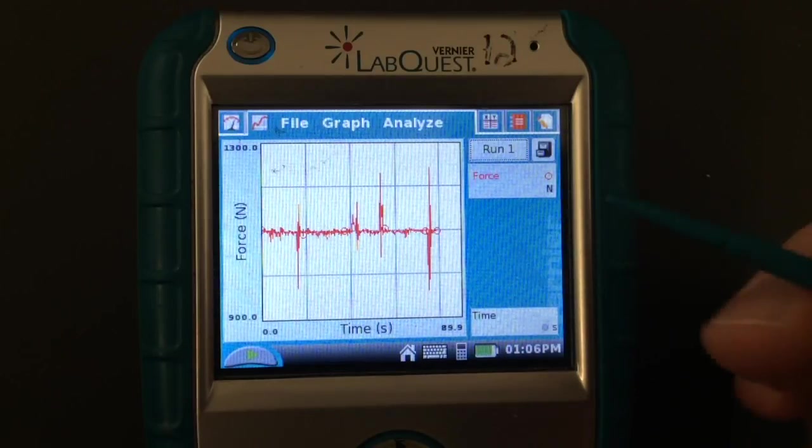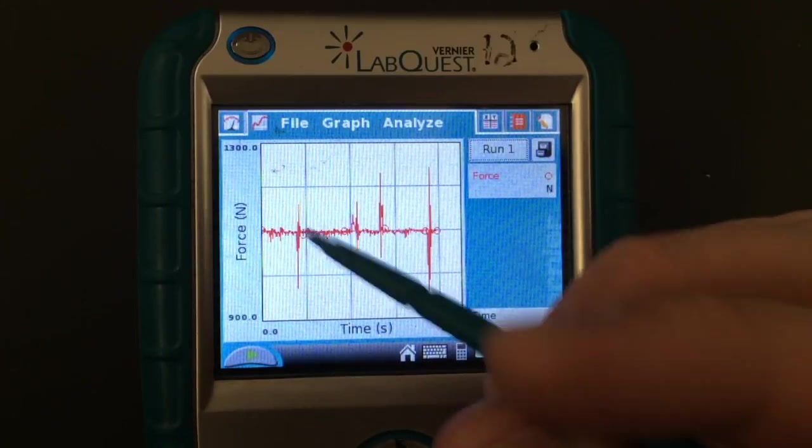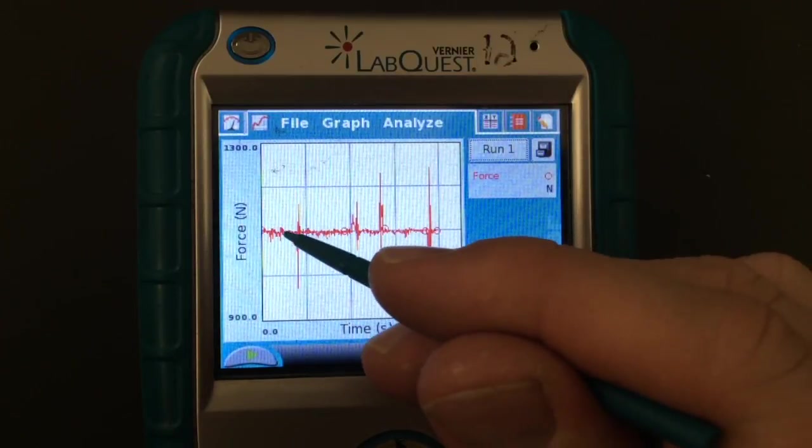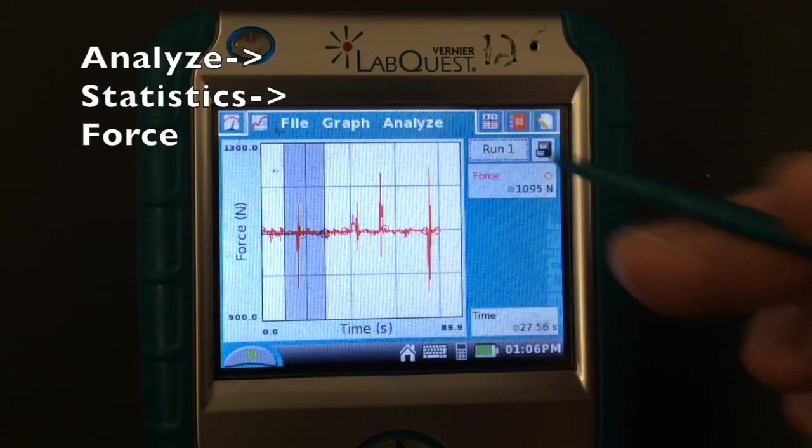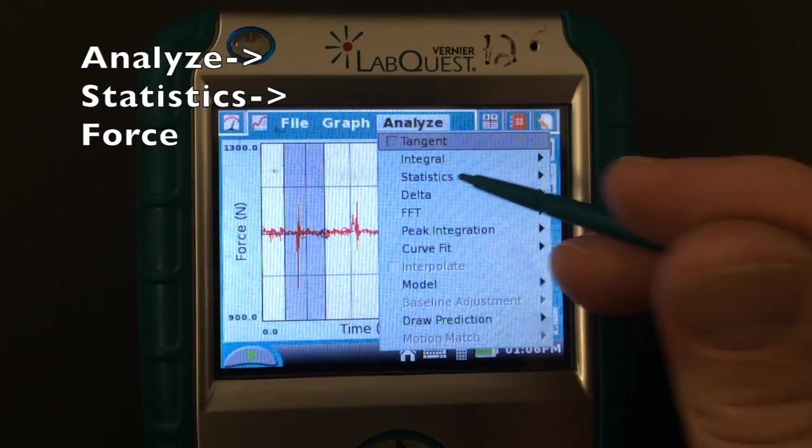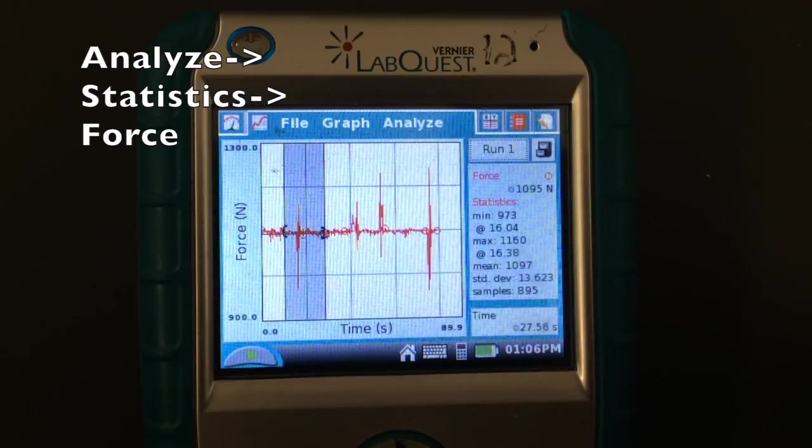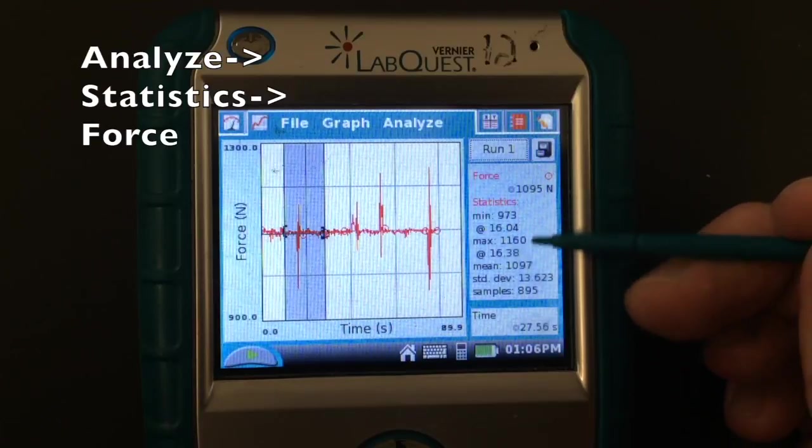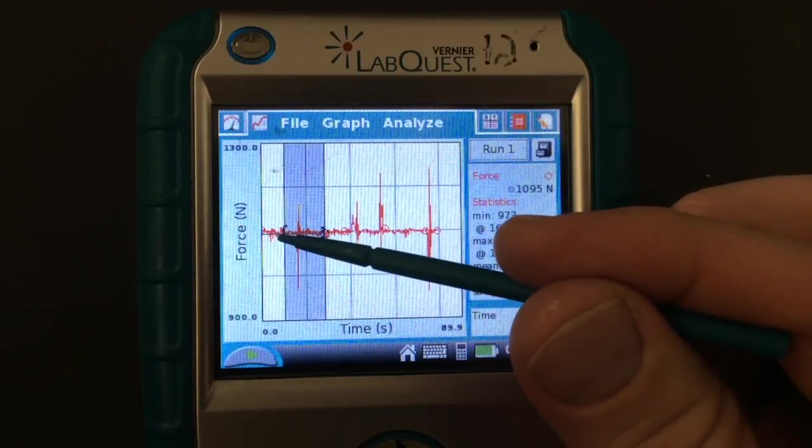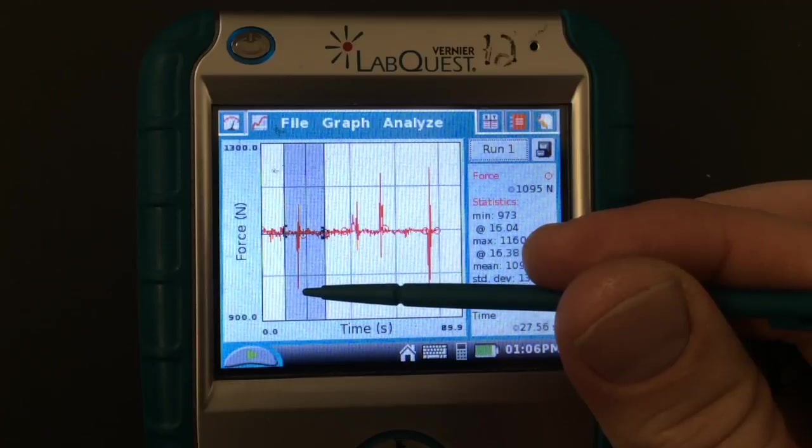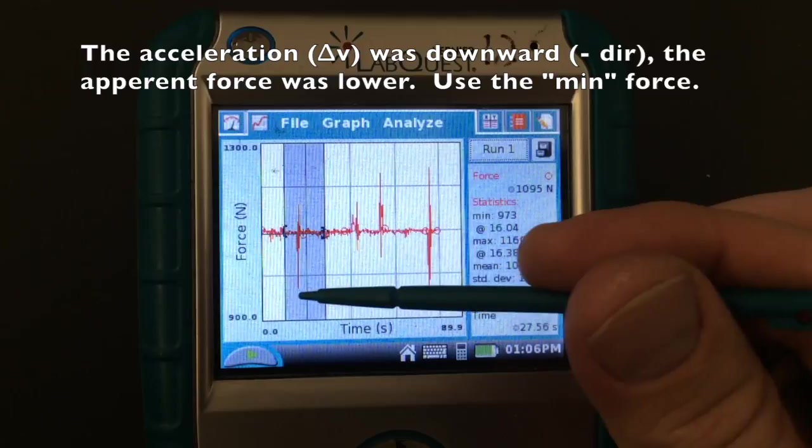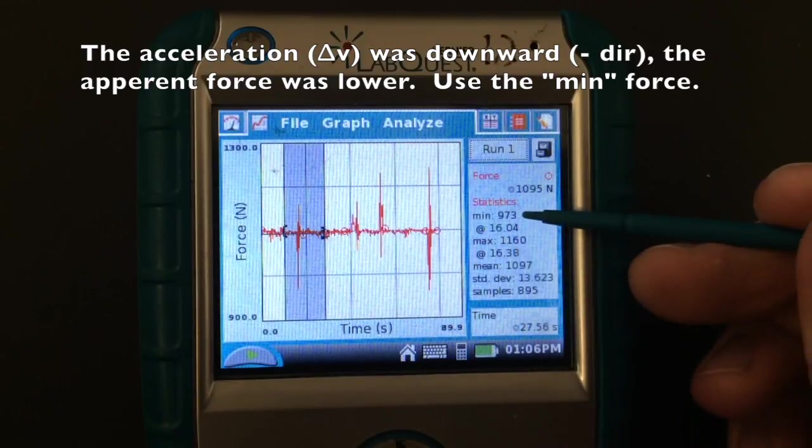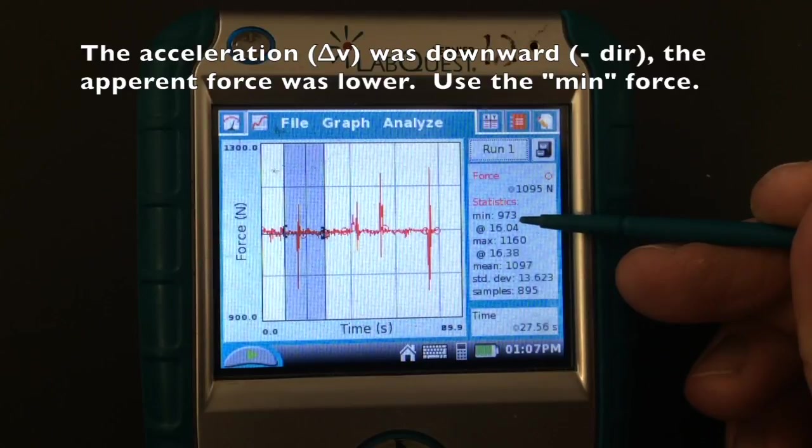Now to get the information that we're looking for, all you have to do is, since this graph is a little hard to read, these LabQuests do a pretty good job. If you want to, just select the information that you're going for. So we're going to select the first peak, and you come up here to Analyze, and you go to Statistics, and you'll say Force. And what it'll do is it'll give you a whole bunch of information over here that's what we're looking for. And so what we're looking for over here is the peak on the bottom. And so this would be the smallest data point, otherwise known as the minimum. So when we first started to go down from the third floor, the force that this force probe is reading was 973.